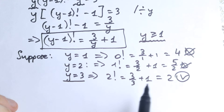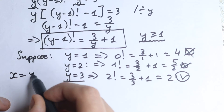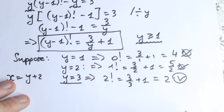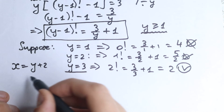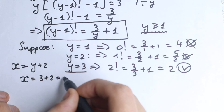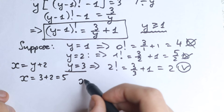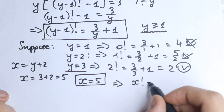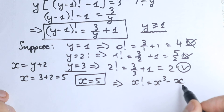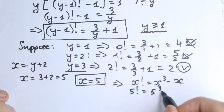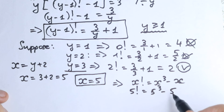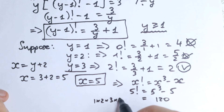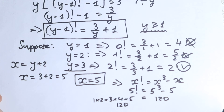That was our y, but we had a substitution: x equals y plus 2. So x equals 3 plus 2, which equals 5. This is our solution. Let's verify: 5 factorial equals 5 cubed minus 5, so 5 factorial equals 125 minus 5 equals 120. And 5 factorial equals 1 times 2 times 3 times 4 times 5 equals 120. Our answer checks out — x equals 5 is correct.